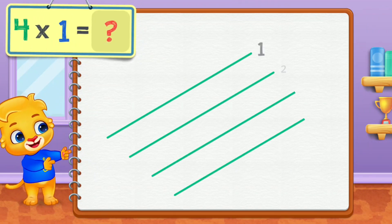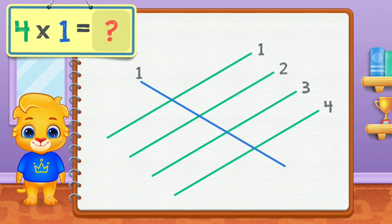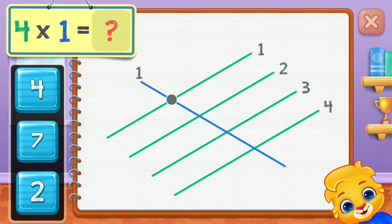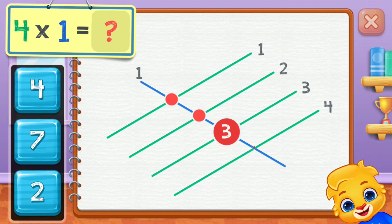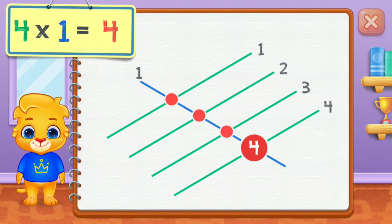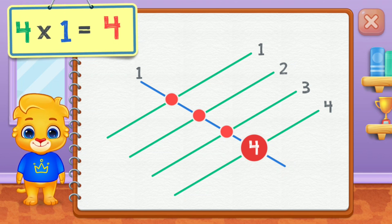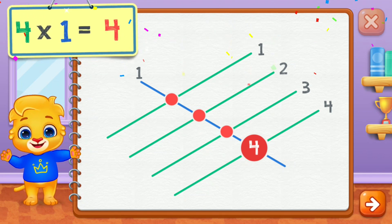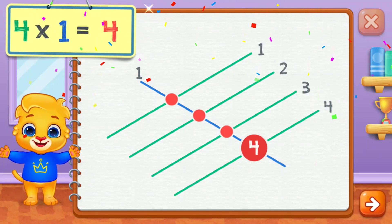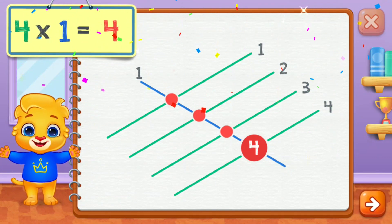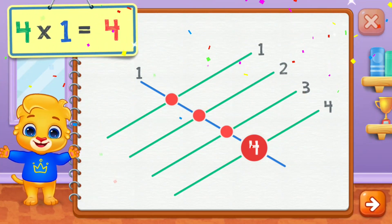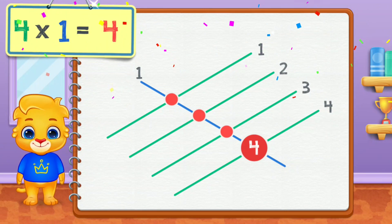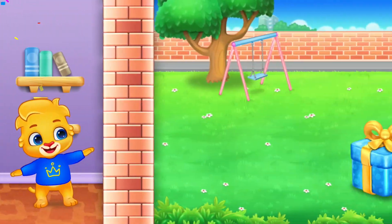Four times one equals... one, two, three, four. Four times one equals four.